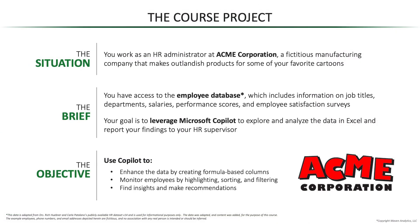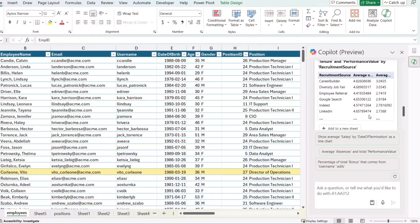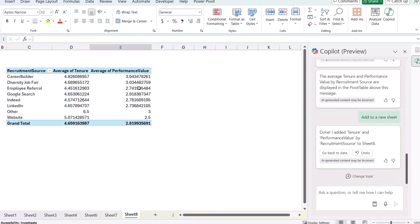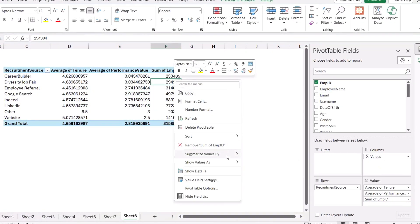Throughout the course, you'll play the role of an HR administrator at Acme Corporation, a manufacturing company that makes outlandish products based on classic cartoons. Using Copilot in Excel and the skills you learn throughout the course, you'll manipulate employee data, monitor performance metrics, and make data-driven recommendations to your HR supervisor.